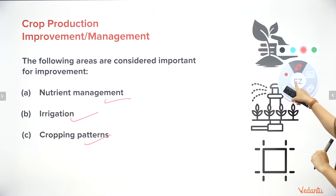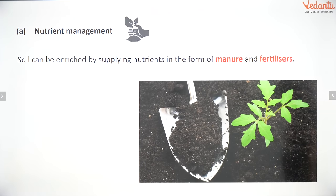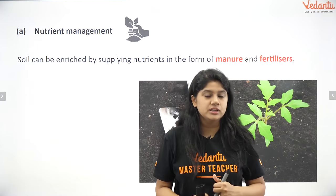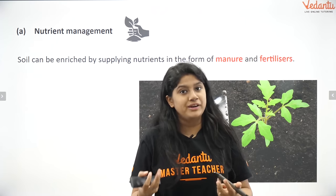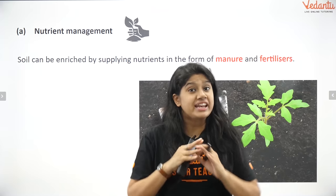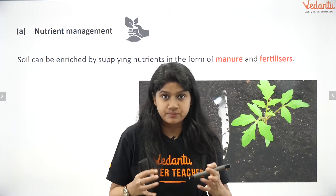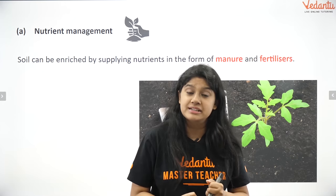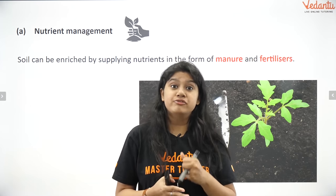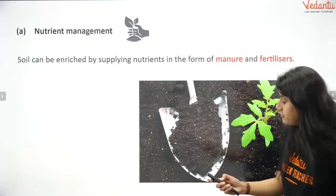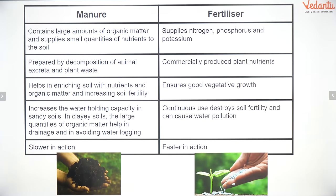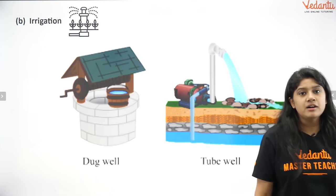First is nutrient management. Just like humans need extra nutrients, plants also need them. To provide extra nutrients we add manure, which is organic in nature and has no harmful chemicals. On the other side we have fertilizers, which are synthetic, made with chemicals, and are not environmentally friendly. A common exam question is to write the difference between manure and fertilizers — take a screenshot of this.